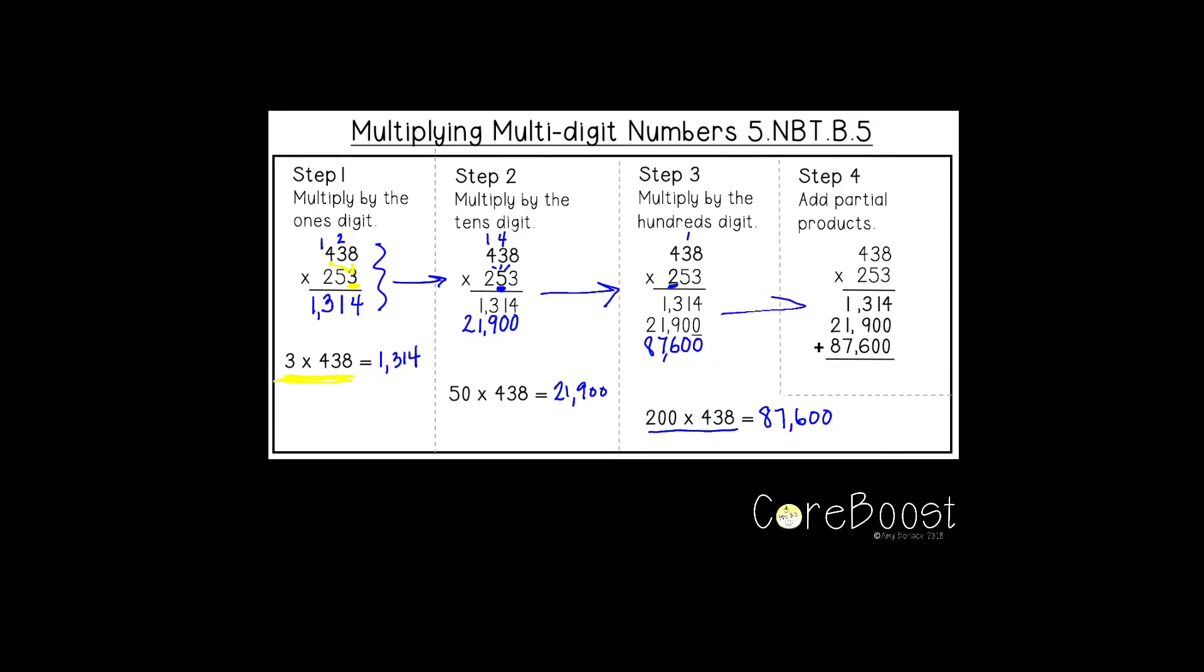Your last step is to add these partial products. Four plus zero plus zero is four. One plus zero plus zero is one. Three, nine, and six is 18. Carry the one. Your final answer is 110,814.